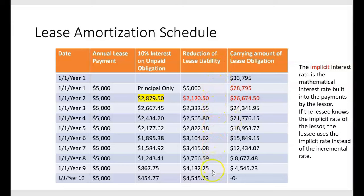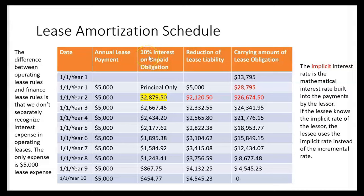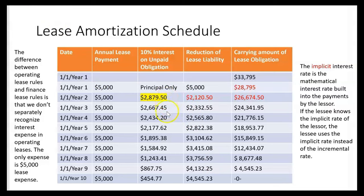We reduce the lease liability by the principal portion — the amount of the payment that doesn't represent interest. At the end we have a zero balance. We must calculate the interest so we can reduce the correct amount of lease obligation. Otherwise we'd be tempted to reduce the lease liability by the full $5,000 every payment — but we can only do that for an immediate first payment, since interest requires time.